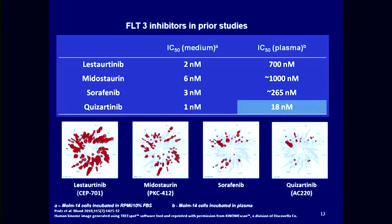Once this gain-of-function mutation was recognized as fairly common in AML, and once the ITD subtype was recognized as a bad prognostic actor, the race was on to develop inhibitors of that kinase — to see if we could be as successful as we were with CML and imatinib. A host of small molecules were developed to inhibit this enzyme, and there are a number of important differences among these inhibitors that may serve as a paradigm for developing inhibitors of other activated kinases.